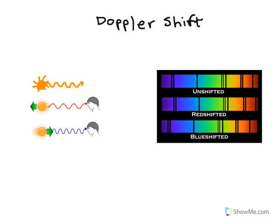Similarly, as the car recedes, the sound waves get stretched. And the more stretched they are, the lower the pitch you hear. Light does the same thing, but it changes the wavelength of the light.